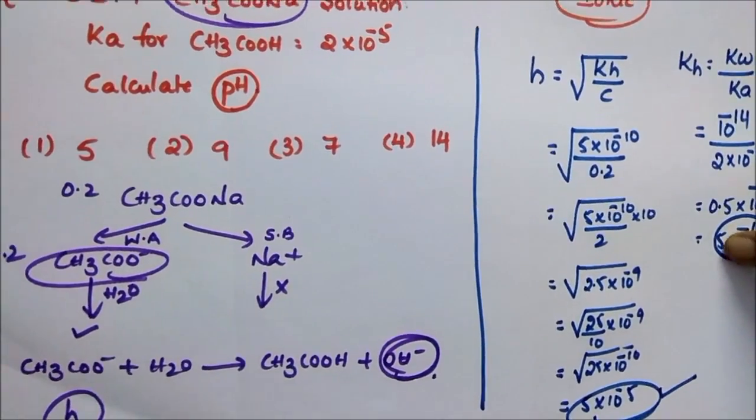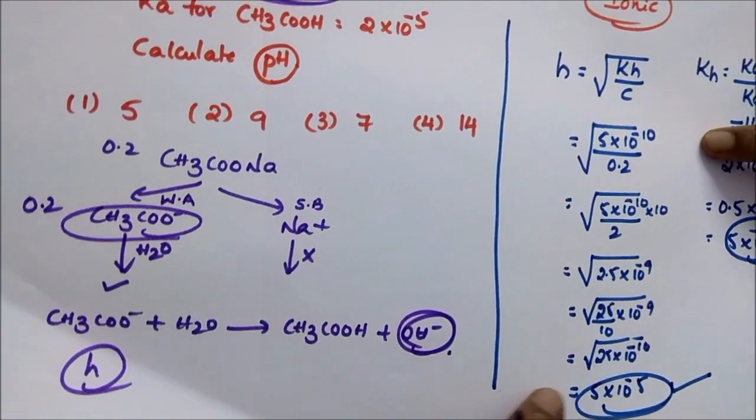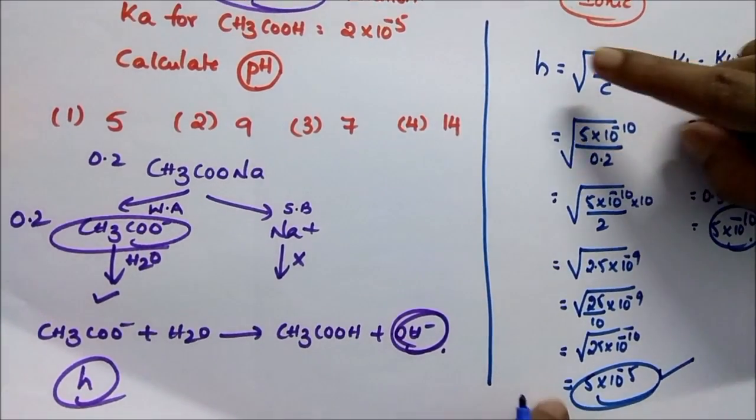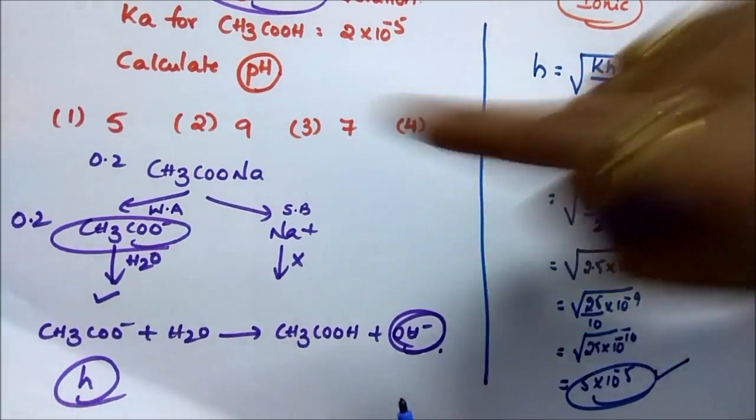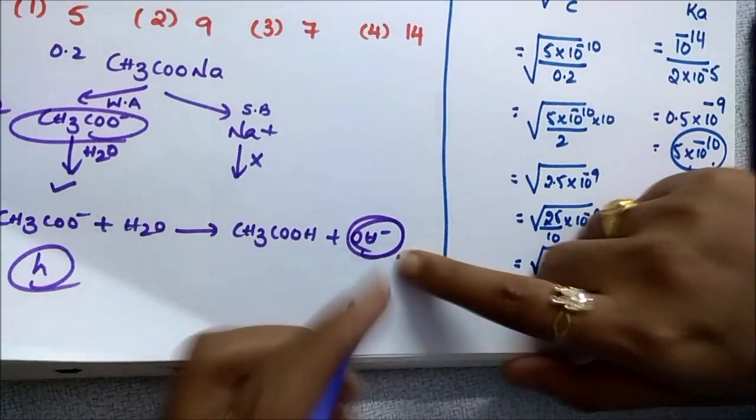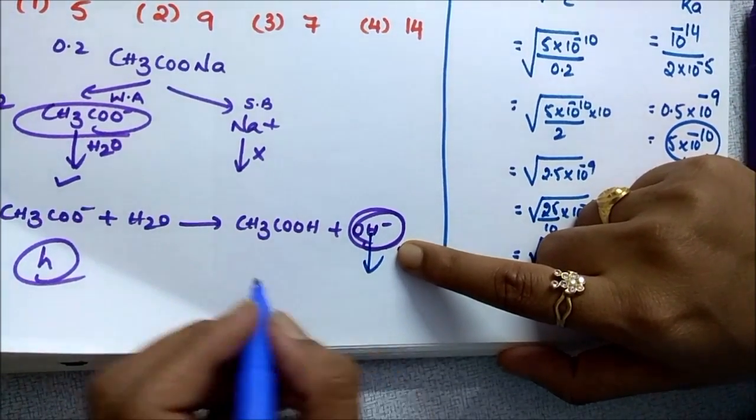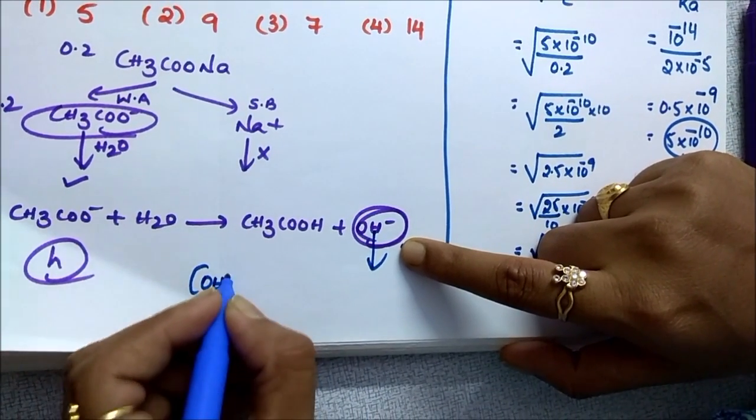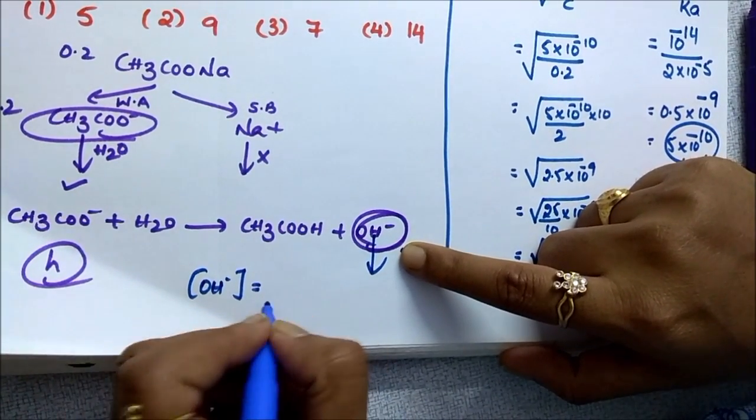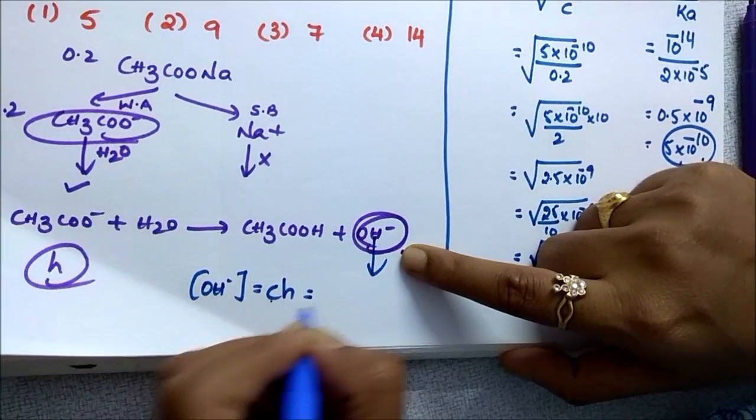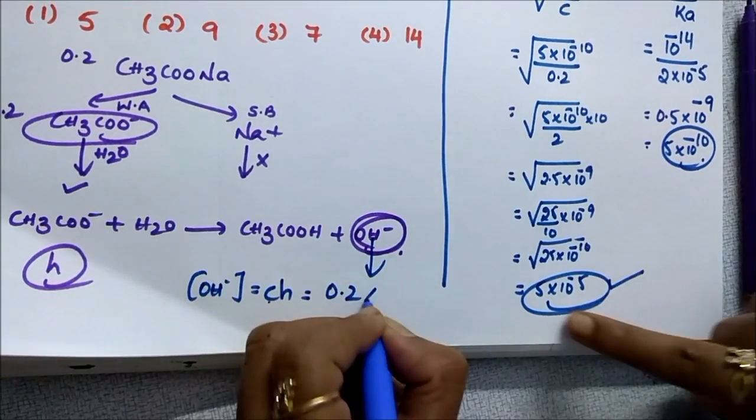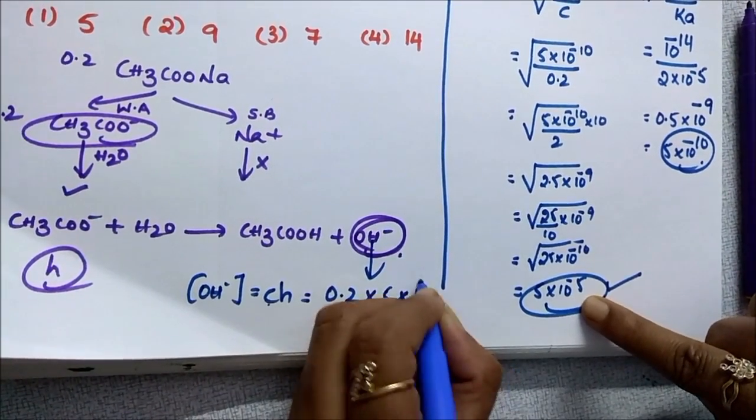We got H. Once we got H, see here, this is not directly H+ concentration. You should not think that. We know that it gives OH minus, which means OH minus concentration. What is the formula I gave you? CH. Then C is how much? 0.2 into 5 into 10 power of minus 5.